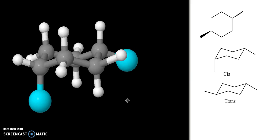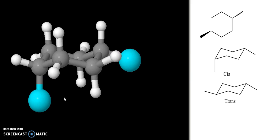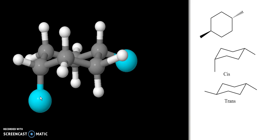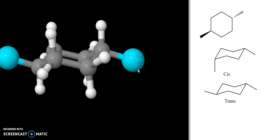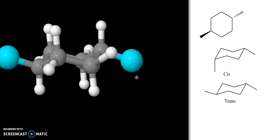If I want to draw the correct structure in my three-dimensional model, I actually have to move one of these groups. I'm going to move this one from the axial position to the equatorial position. So now this group is equatorial and pointing slightly up. This is equatorial and pointing down. They are trans to one another.